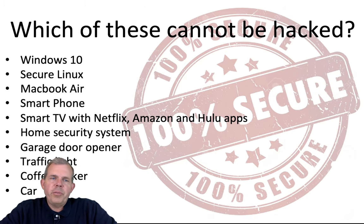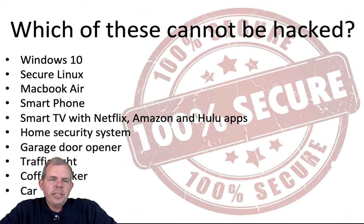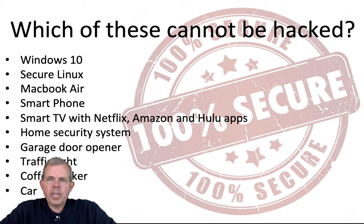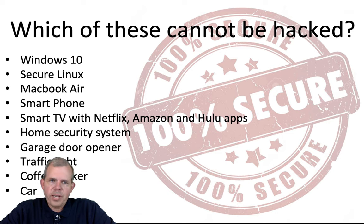Here's another question: which one of these things cannot be hacked? You might think maybe the coffee maker or the garage door opener, simply because they don't have computer systems — or do they? It seems like everything today has a computer in it with software and communications. With the Internet of Things, pretty much everything is hackable.